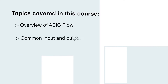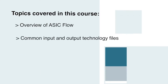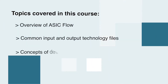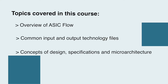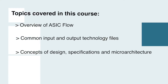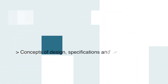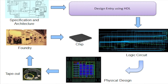This course covers the following topics: an overview of ASIC flow, common input and output and technology files dealt with in the design flow. It further addresses the concepts of design specification and microarchitecture, and takes the learner through steps such as RTL design and verification, logic synthesis and timing analysis.